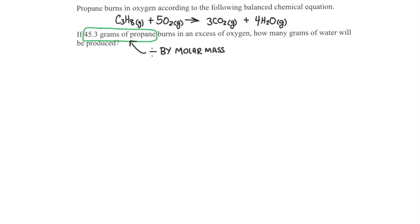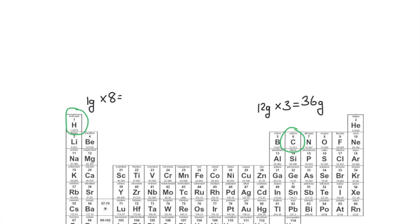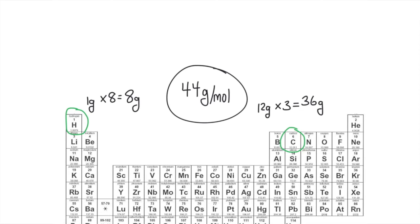45.3 grams of propane divided by the molar mass of propane. We need to check the periodic table to find the molar mass of each element in this compound. There are three carbon atoms, and each carbon has a molar mass of 12, so that's 36. Plus 8 hydrogen atoms, each with a molar mass of 1, so that's 8. So 36 plus 8 gives us a molar mass of 44.